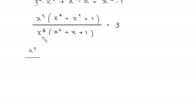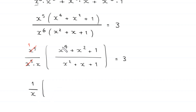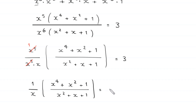The left-hand side can be written as x⁵ divided by x⁶, which is the same as 1 over x, times the expression (x⁴ + x² + 1) divided by (x² + x + 1), equal to 3.